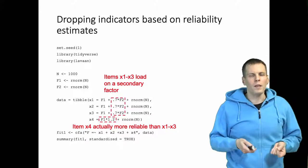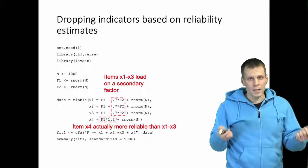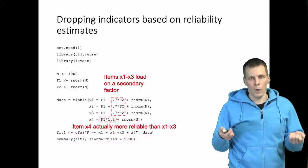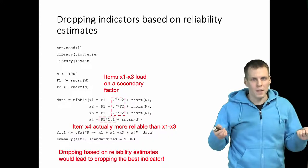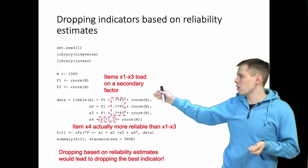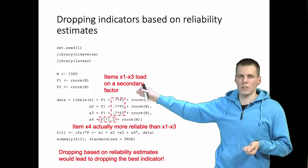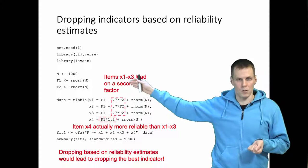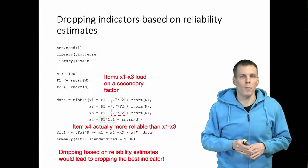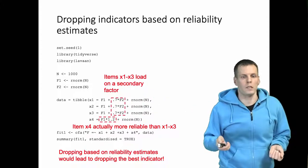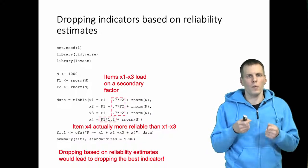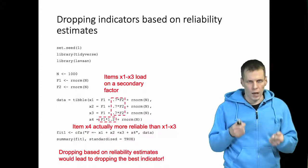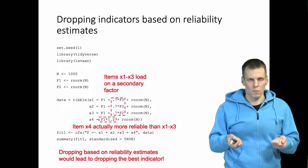So when we are dropping x4, yes we will get a well-fitting model because it is just identified, but we are also dropping the best indicator that we have, and we will not notice that there's actually a secondary dimension to the scale that we would probably want to model with the bifactor model instead. So this is the first bad practice: you should never drop indicators based on the reliability in a confirmatory factor analysis model.